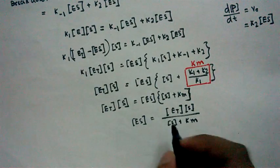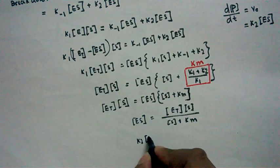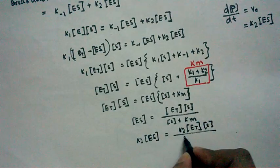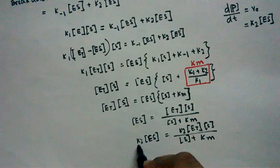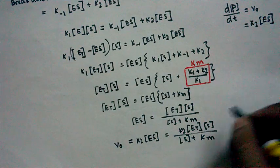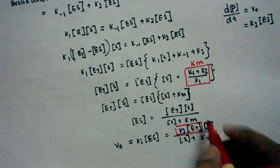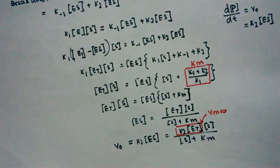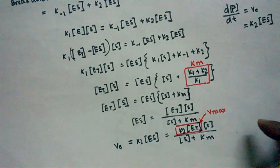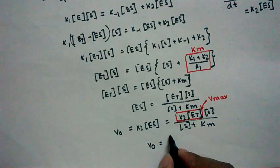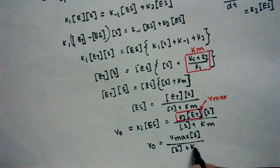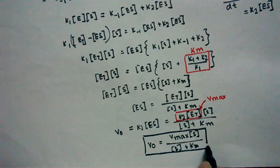If we multiply both sides of the [ES] expression by k2, then k2·[ES] gives us the velocity of the enzymatic reaction. The quantity k2·[E]t is defined as Vmax — the maximal velocity of the enzyme when all active sites are saturated. Therefore, v0 = Vmax·[S] / ([S] + Km). This is the Michaelis-Menten equation.